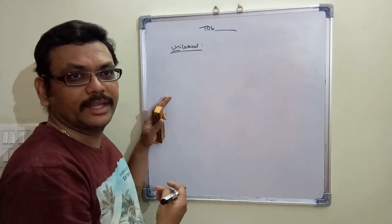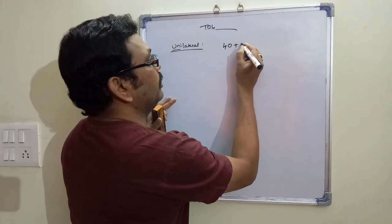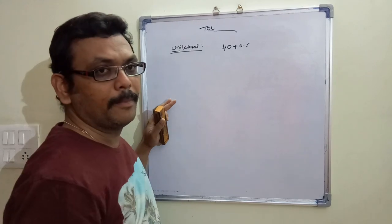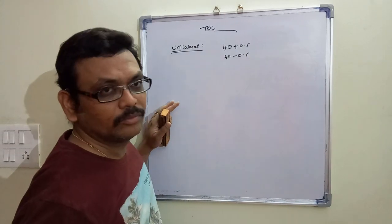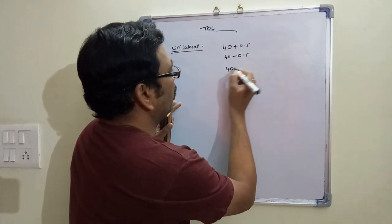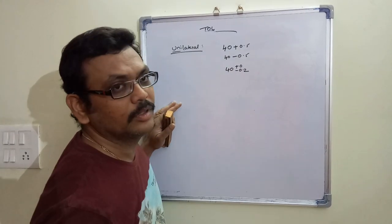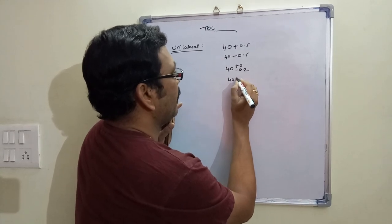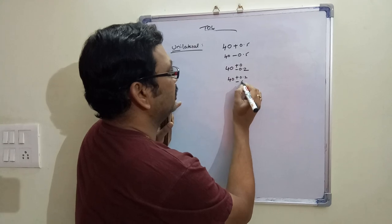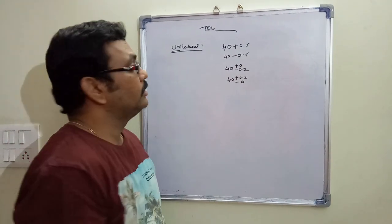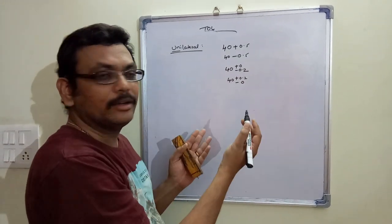Examples of unilateral tolerance representations include: 40 +0.5 / −0 and 40 −0.5 / +0, as well as 40 +0.2 / −0 or 40 −0.2 / +0. These are some of the ways we represent a unilateral tolerance.